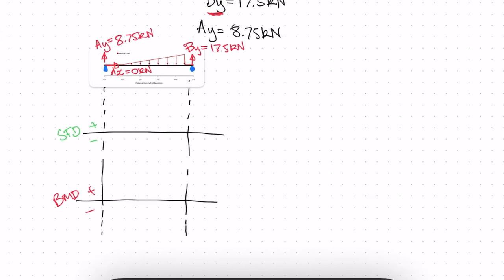We can find our important shear values. Straight away we can see that we have a positive 8.75 kilonewtons going up, and this remains unchanged until we reach our one meter point — so at one meter it is still 8.75 kilonewtons. Next we have an increasing distributed load, so we'll have a curved line, but we don't know the values or the distance yet. We need to develop our shear and moment functions.